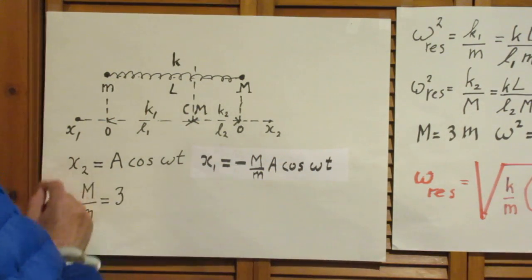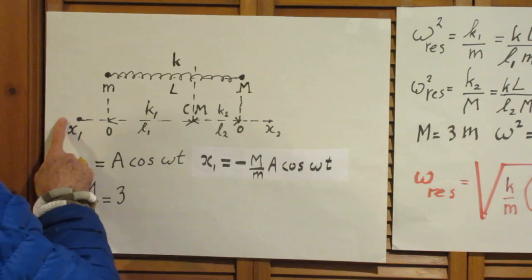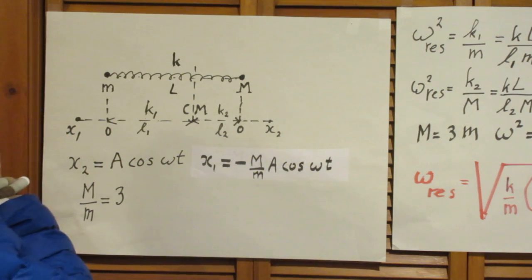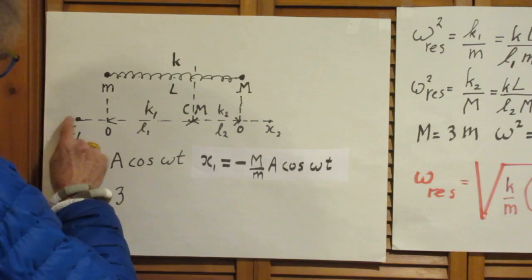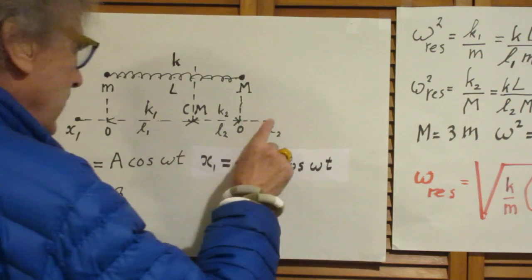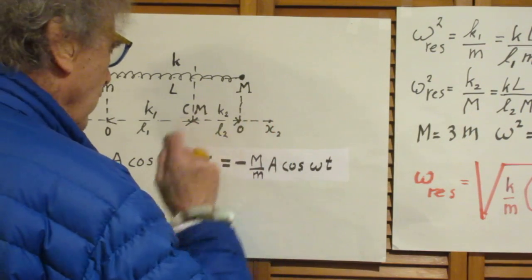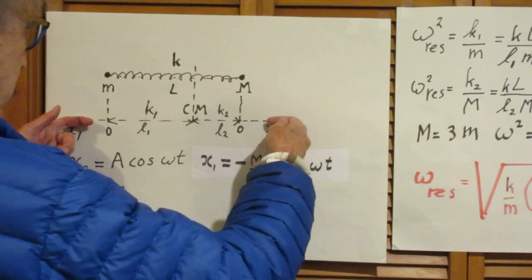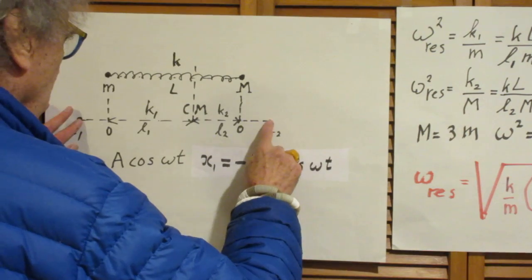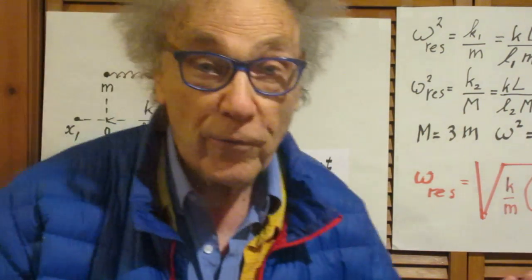And if M over m were 3, then this amplitude would therefore be three times higher than this amplitude. So that the spring force on this object in this direction when it comes to hold is exactly the same as the spring force in this direction when this one comes to hold. So, they both experience force in this direction, force in this direction. The two forces are the same and the center of mass is therefore not accelerated.